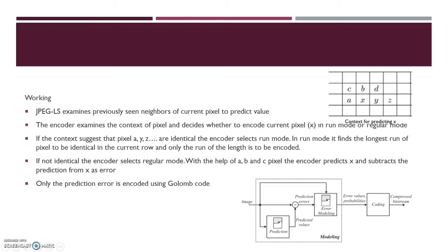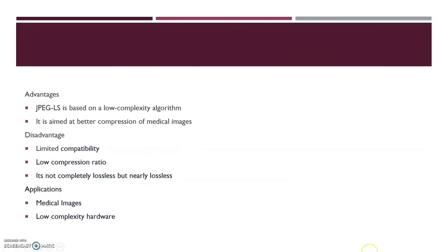If not identical, the encoder selects regular mode. With the help of pixels a, b and c, the encoder predicts the value of x and subtracts it from the actual value as an error. Only the prediction error is encoded using Golomb code. Only the errors having certain probabilities are encoded and compressed into a bit stream. Advantages: JPEG-LS is based on a low complexity algorithm and is aimed at better compression of medical images. Disadvantages: limited compatibility, low compression ratio, and it is not completely lossless but nearly lossless. Applications include medical images and low complexity hardware.